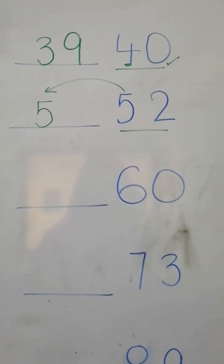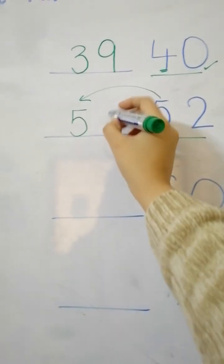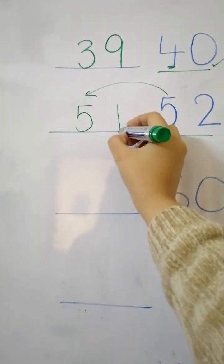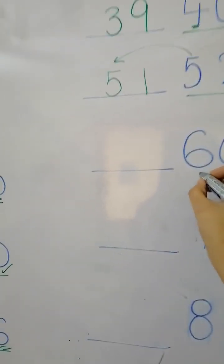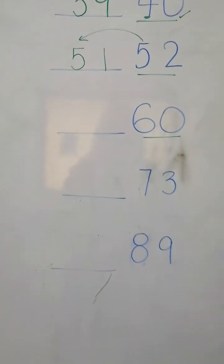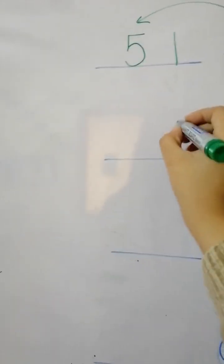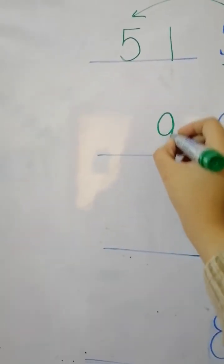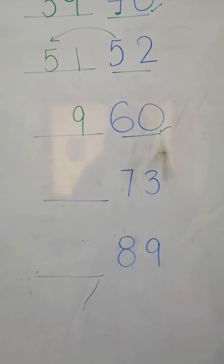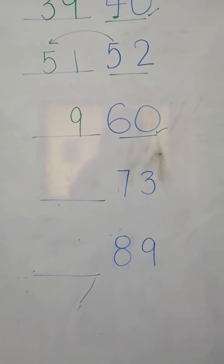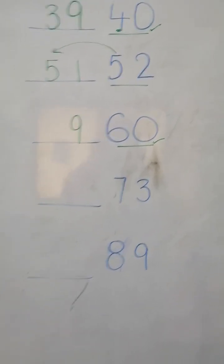What comes before two? Five, four, three, two, one — yes, right, very good. Next we have sixty — six zero. What should we write in the place of zero? We will write number nine. And what comes before six? Ten, nine, eight, seven, six, five.